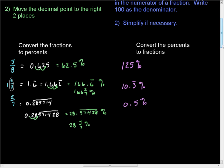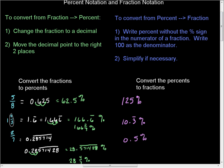Now, if we want to go backwards, it's simply working in reverse. To convert from percent to fraction: write the percent without the percent sign as the numerator, and write 100 as the denominator. Applying step one to the first example gives us 125 over 100.